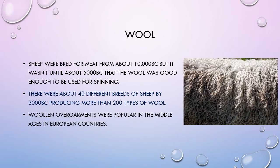Moving on to our natural animal fibres — sheep were bred for meat from about 10,000 BC, but it wasn't until about 5000 BC that the wool was of good enough quality to be used for spinning. There were around 40 different breeds of sheep by 3000 BC, producing more than 200 types of wool. Woollen garments were popular in the Middle Ages in European countries.